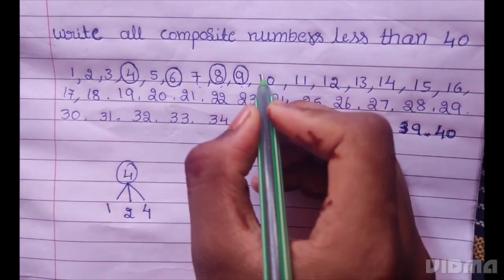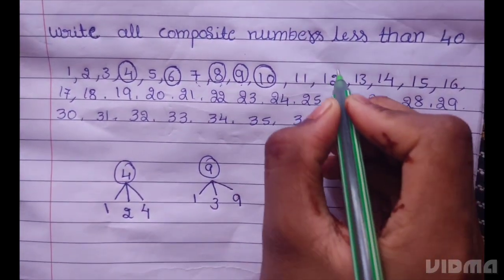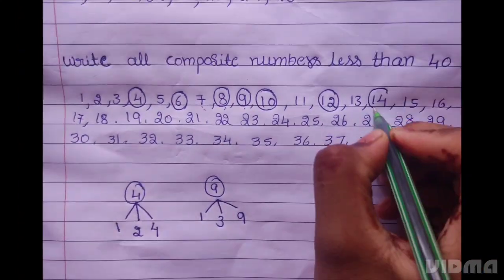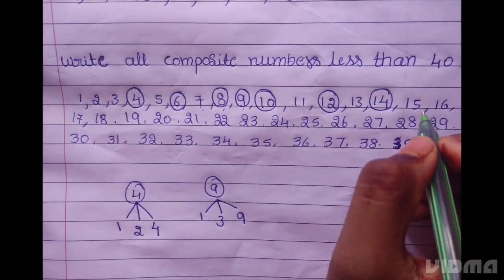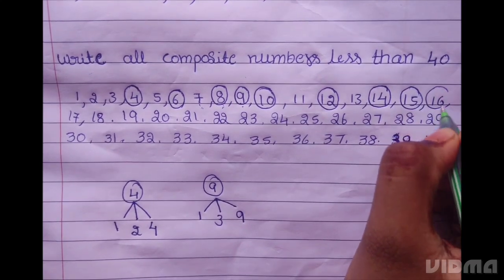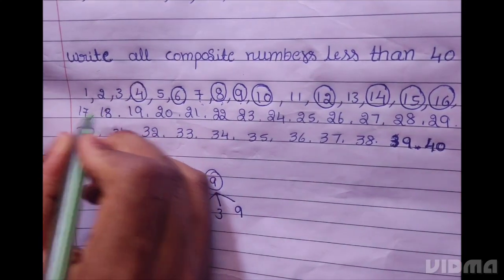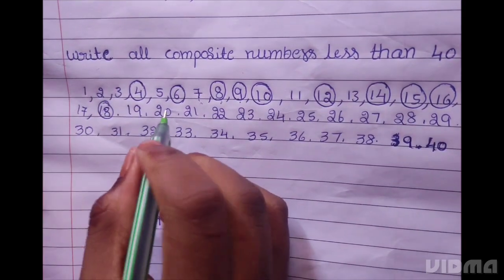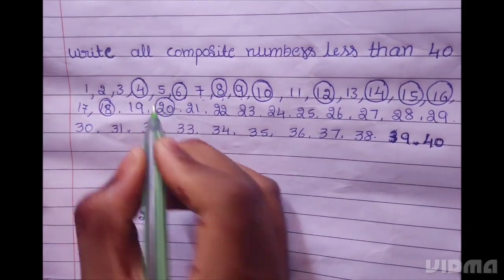10 is composite number, 12 is composite number, 14 is composite number, 15 is composite number, 16 is composite number, 18 is composite number, 20 is composite number.